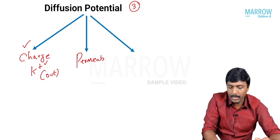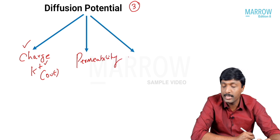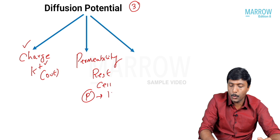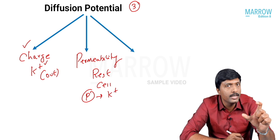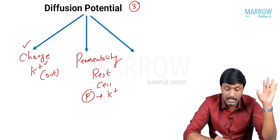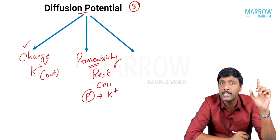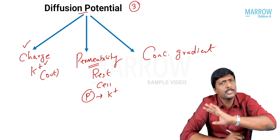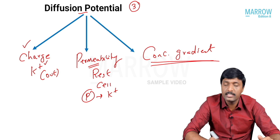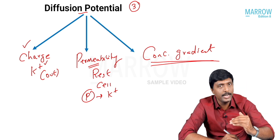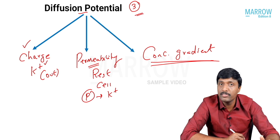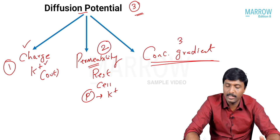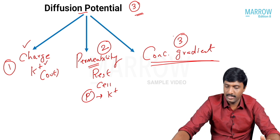The second determinant is permeability. Even at rest, remember, the cell is permeable to potassium — even though it is not stimulated, it is permeable to potassium. So this resting permeability determines diffusion potential. And finally, the extremely important concentration gradient: in simple diffusion we always require a concentration gradient, as potassium is moving from inside to outside. So the three determinants of diffusion potential are: first, the charge; second, the permeability of potassium at rest; and third, the concentration gradient.